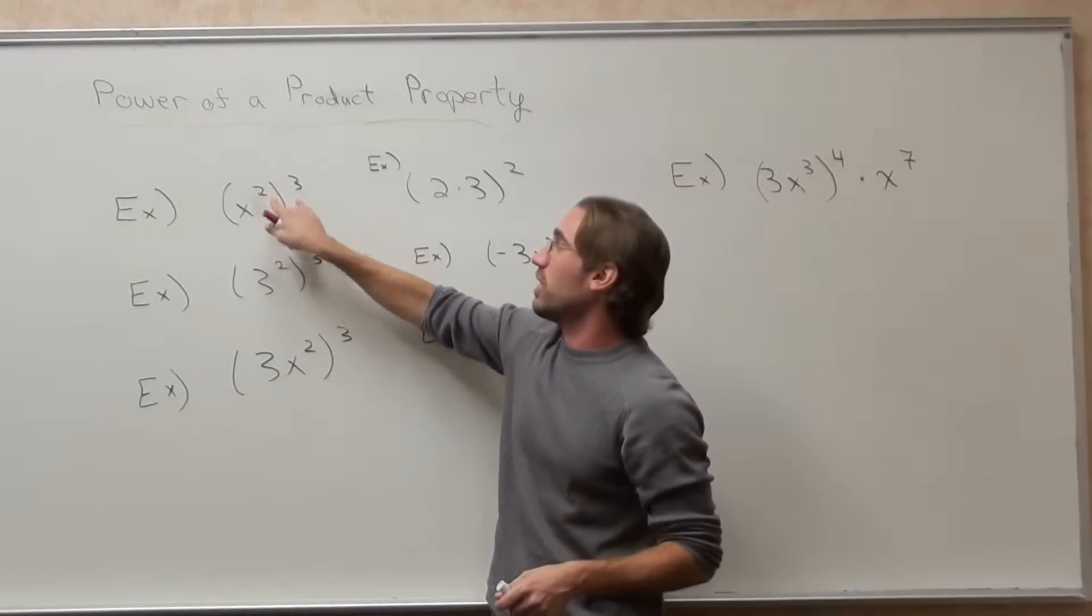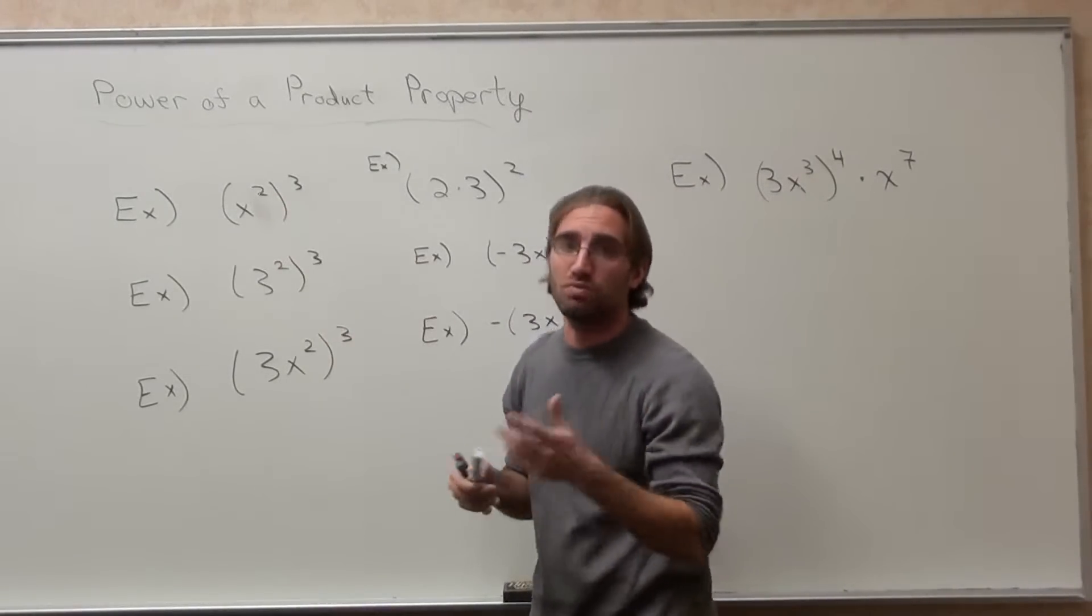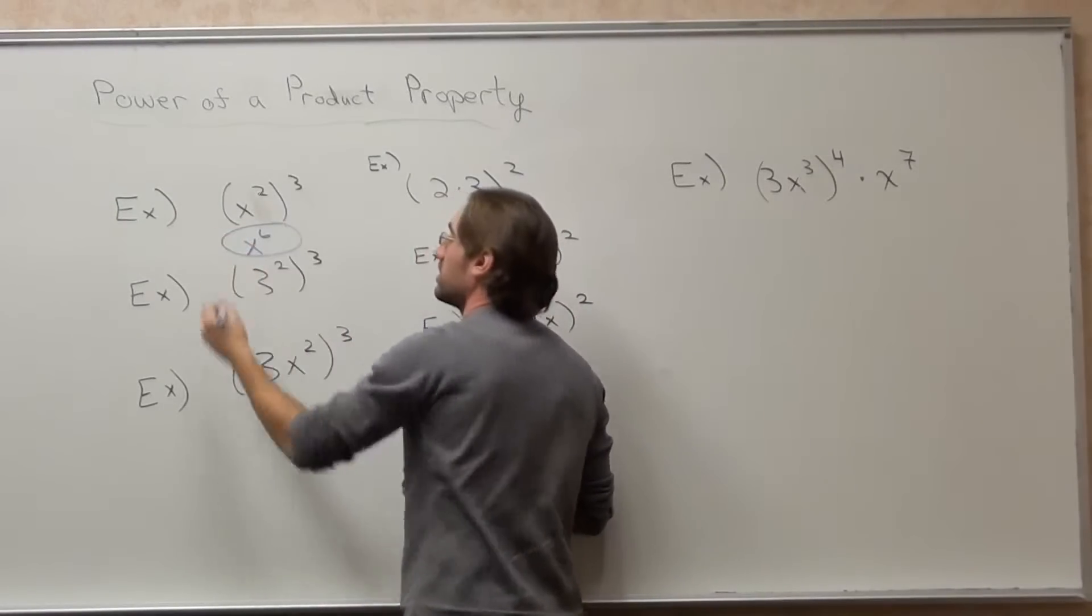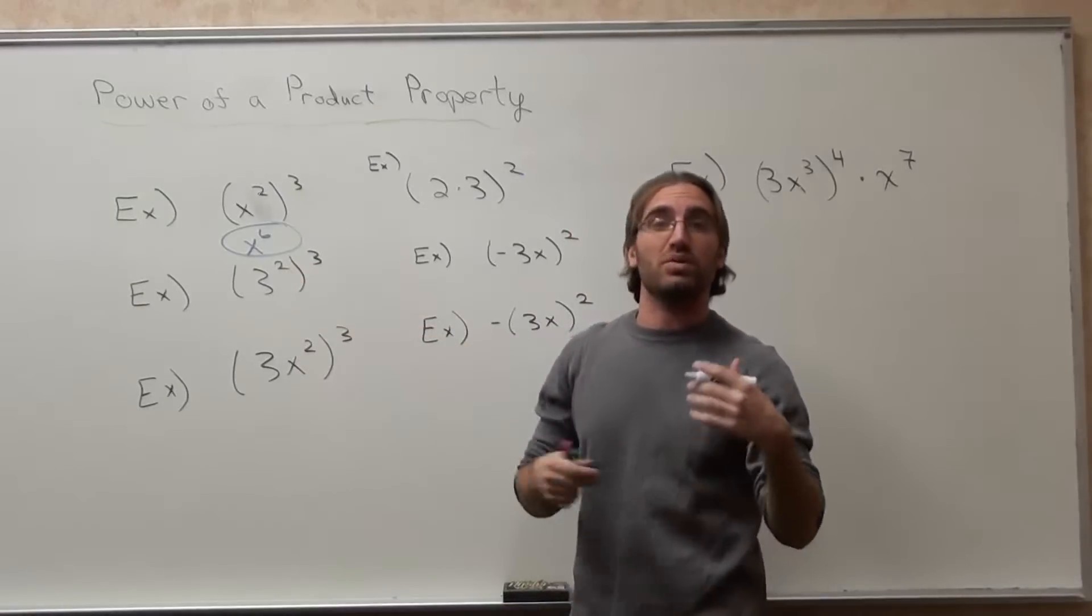When you see two exponents next to each other and there's one base, you multiply them. X to the sixth. This one is 2 times 3, which is 6.